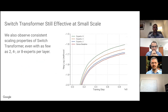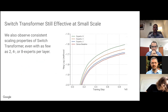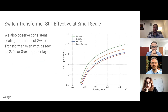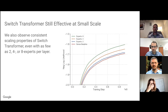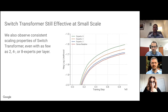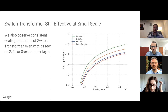We also wanted to see if Switch Transformers are still effective at small scale. Typically we run with one expert per core, so 32 experts means training on 32 cores — potentially impractical for those without access to supercomputers. We tested with just two, four, or eight experts. We get some solid improvements even with just four to eight experts. Two experts is practical for something like a new GPU chip with two cores per chip. These models can be generally applicable even without training on many cores at once.